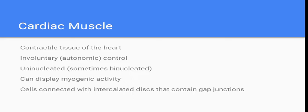Cardiac muscle is the tissue of the heart. You can't control what your heart does — it's involuntary, or autonomic control. It's also uninucleated, but sometimes binucleated. Cells are connected by intercalated discs that contain gap junctions. Something to keep in mind: skeletal muscle is the main tissue that does not have gap junctions — I missed a question because of that.